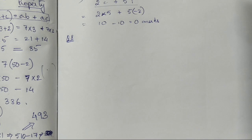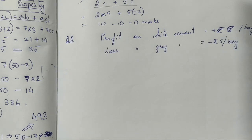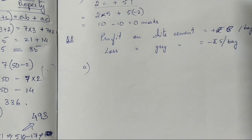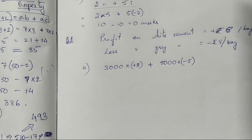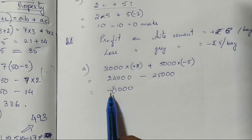Question 8 involves two types of cement bags: white cement gives a profit of ₹8 per bag and grey cement gives a loss of ₹5 per bag. White cement is +8 rupees per bag and grey cement is -5 rupees per bag. We multiply each by the number of bags sold and sum them. The total comes to -₹1000, meaning there is a loss of ₹1000.